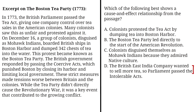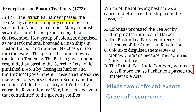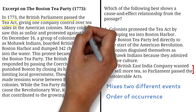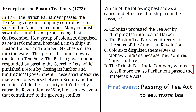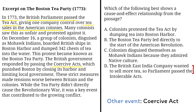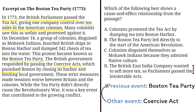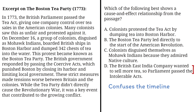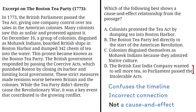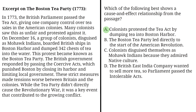Option D says: The British East India Company wanted to sell more tea, so Parliament passed the Coercive Acts. That's incorrect. This mixes up two different events in the order in which they happened. In the passage, the British Parliament passed the Tea Act in 1773 to help the company sell more tea in American colonies — that was the first event. The Coercive Acts came later, after the Boston Tea Party, as punishment, not to help sell tea. So Option D confuses the timeline and makes an incorrect connection between two unrelated cause-and-effect events. The correct answer is A: Colonists protested the Tea Act by dumping tea into Boston Harbor.